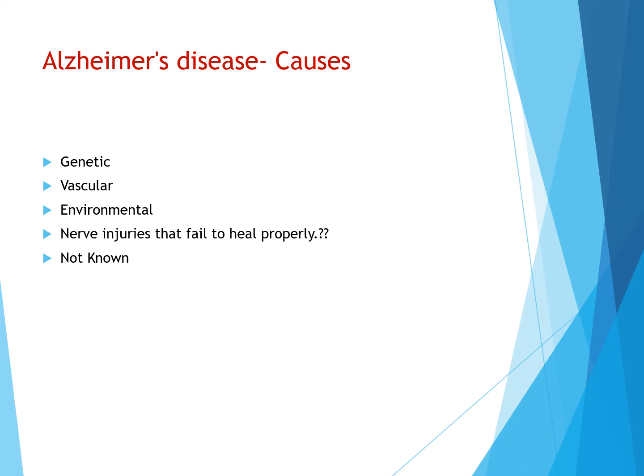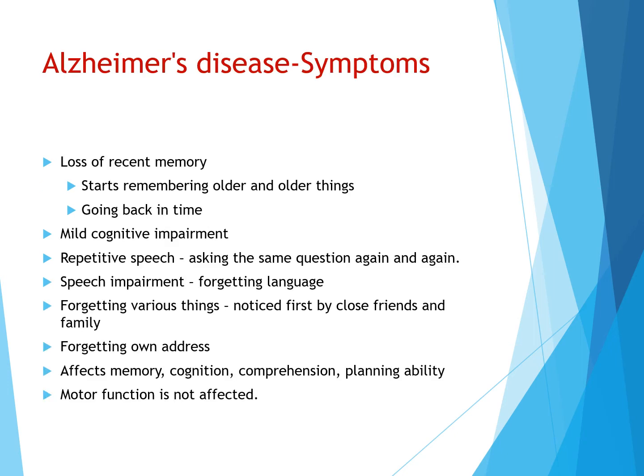Ultimately, there is no known specific cause for Alzheimer's disease. As far as symptoms are concerned, the most important symptom is loss of recent memory. The past memory is intact — things which happened long back are remembered — but there is loss of memory for recent events, as if the person is going back in time.